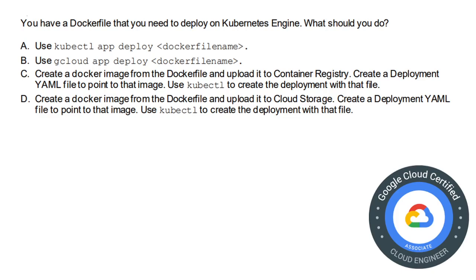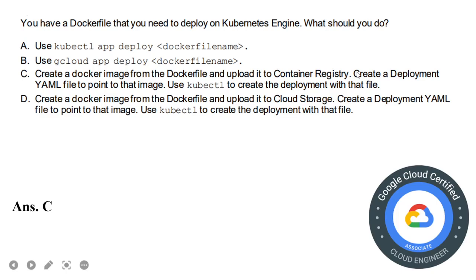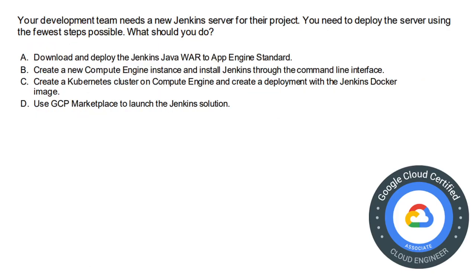Moving on to the next question. You have a Dockerfile that you need to deploy on Kubernetes Engine. The options are: A) Use kubectl app deploy with the filename; B) Use gcloud app deploy with the filename; C) Create a Docker image from the Dockerfile, upload it to Container Registry, create a deployment YAML file pointing to that image, and use kubectl to create the deployment; D) Same as C but upload to Cloud Storage instead. The correct answer is option C: use Container Registry.